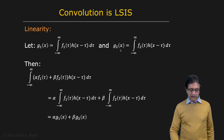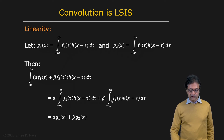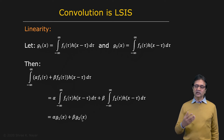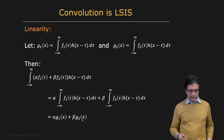Now, if you take a linear combination of f1 and f2 — you get alpha f1 plus beta f2 — and you convolve that with h, you can then rewrite this in terms of two integrals. You can also take alpha and beta, the two constants, out. So you get alpha times this integral and beta times this integral. Well, this integral is g1 and this one is g2. So you get alpha times g1 plus beta times g2, and that is the linearity condition. So that's satisfied by convolution.